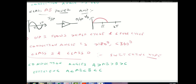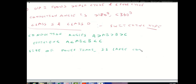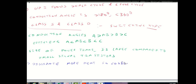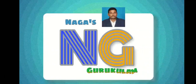That concludes the introduction to power amplifiers. Power amplifiers dissipate excess power as heat, so a cooling arrangement is needed to remove excess heat from the circuit. Thank you for watching this video. Please subscribe to Naga's Guru Kulam.